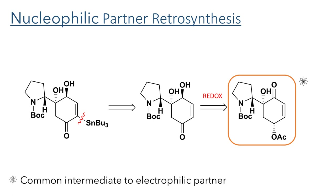For the retrosynthesis of the nucleophilic coupling partner, it is first disconnected at the stannyl group, which is required for the Stille coupling. This can be made from an alpha-beta unsaturated cyclohexanone, which bears a 1,2 trans-diol oxidation pattern. Using oxidation and reduction chemistry, this can be derived from the same acetylated cyclohexanone which is used for the electrophile synthesis.